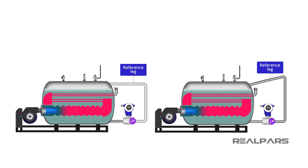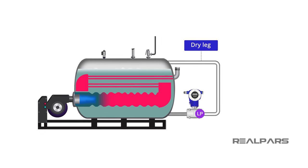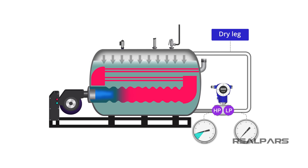The reference leg may be dry or filled with liquid. If the reference leg is dry, it is commonly referred to as a dry leg, and if the leg is filled, it is commonly referred to as a wet leg. In a dry leg system, the vapor pressure is applied to both the high pressure and the low pressure sides of the differential pressure transmitter. The same pressure applied on each side basically cancels each other out.